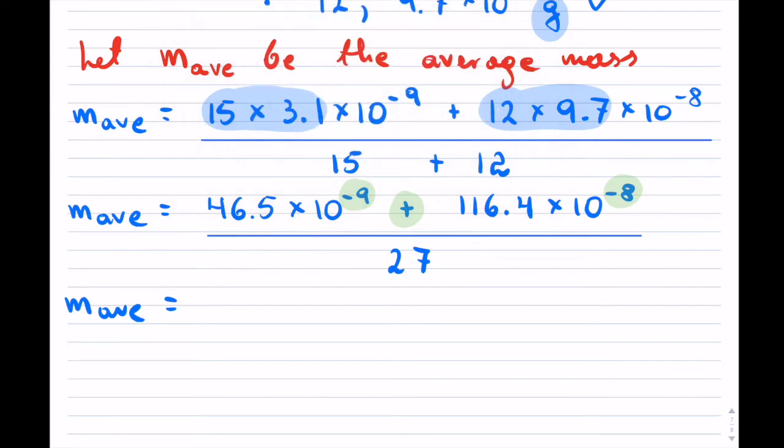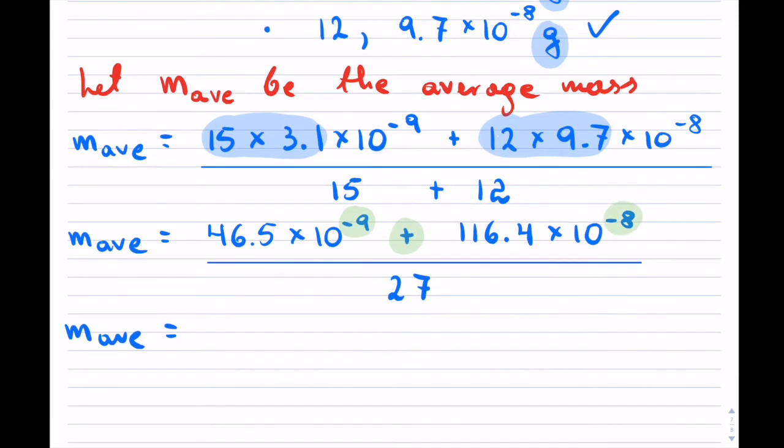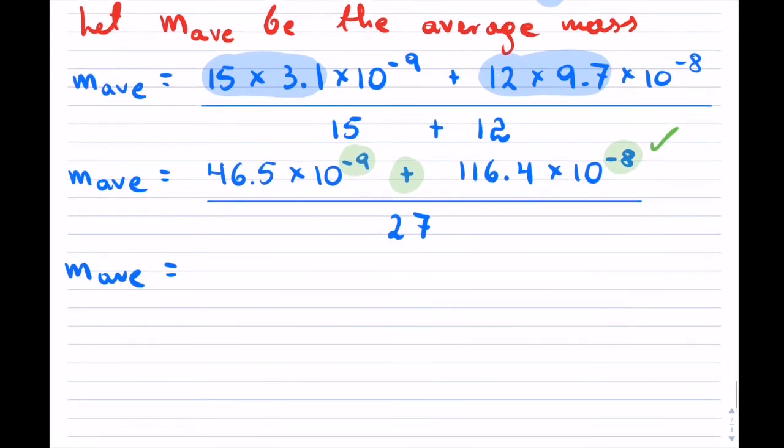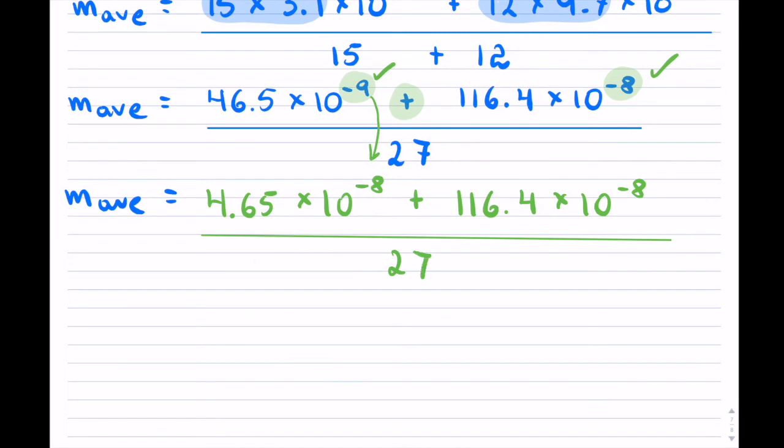I'm going to pick the higher exponent, so this one will stay plus now this exponent. Notice this got basically bigger by one so this is going to get smaller by one. Now the exponents are the same so it makes my life a lot easier.